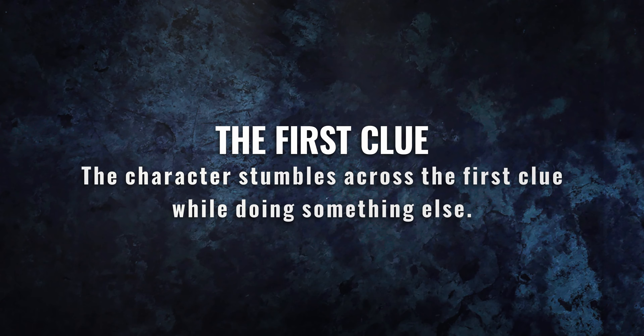The character was doing something completely separate. They weren't looking for any puzzle pieces because they didn't know there were any to find. And while they were doing something — whatever they were doing — they stumbled across the first clue. Right place, right time, that's all. That is how our character finds the first clue. They stumble across it while they were doing something else.